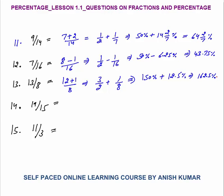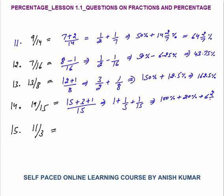19 by 15: break as 15 plus 3 plus 1 by 15. So 15/15 is 1, plus 3/15 which is 1/5, plus 1/15. 1 is 100%, 1/5 is 20%, and 1/15 is 6 and 2/3% as discussed in the previous lesson. So the final answer is 126 and 2/3%.